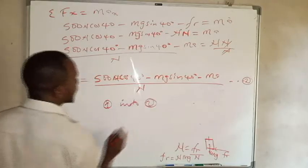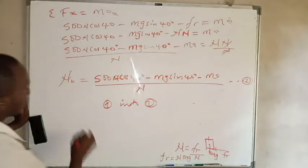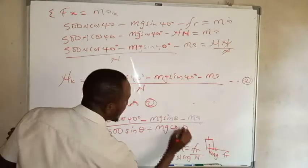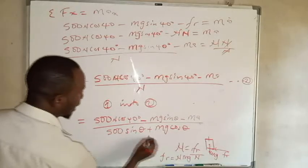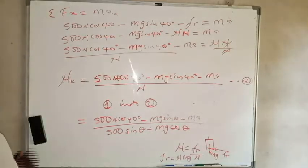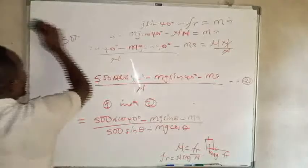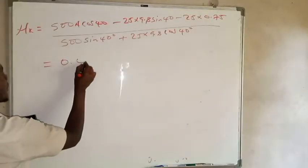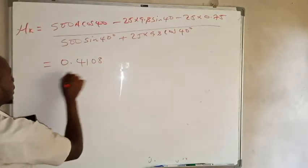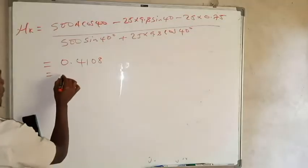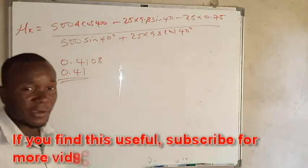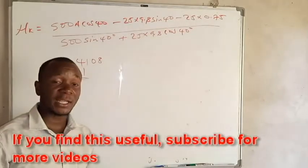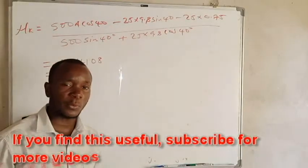Now, substituting equation one into equation two and plugging in all the values, we get mu_k equals 0.4108, which we can round off to 0.41. This confirms the coefficient of kinetic friction between the inclined plane and the block. Thank you so much.